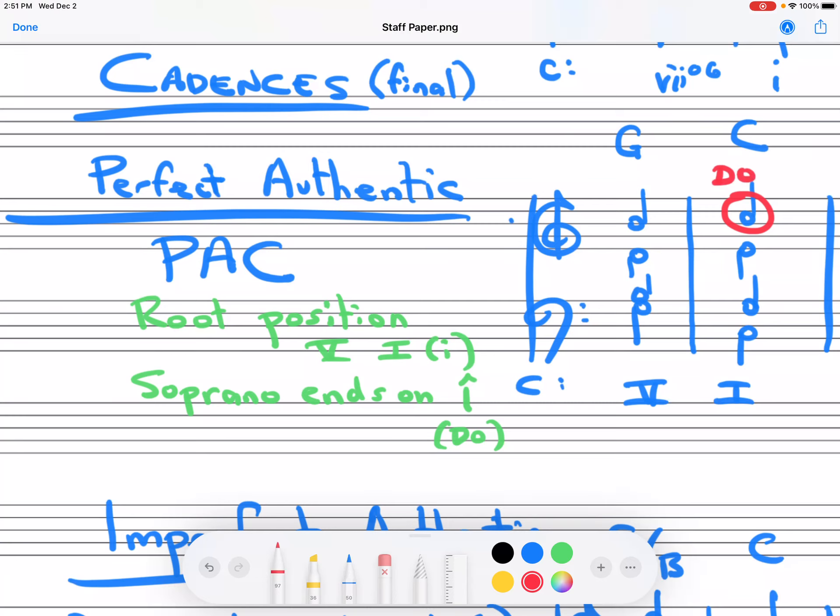I'll play it as written here in C major. One way to recognize this cadence is that the bass leaps from So to Do because it's in root position. And if you listen to the last note the soprano ends on, it ends on Do.